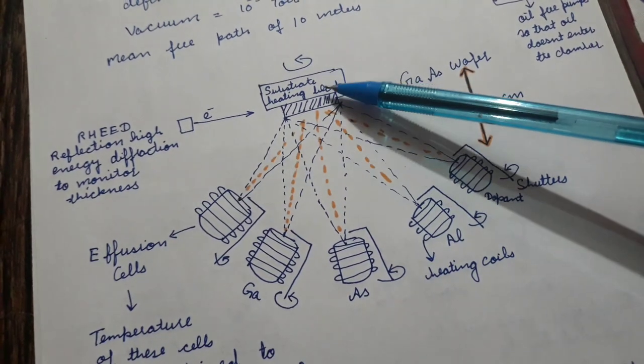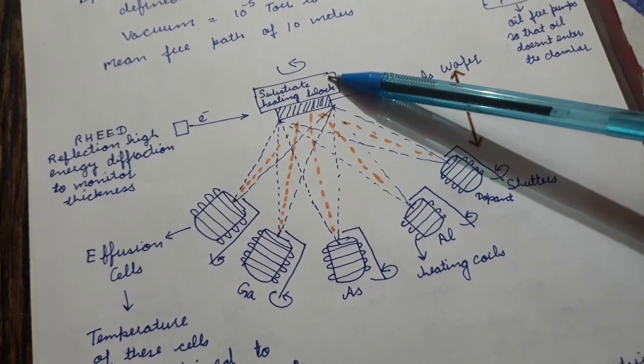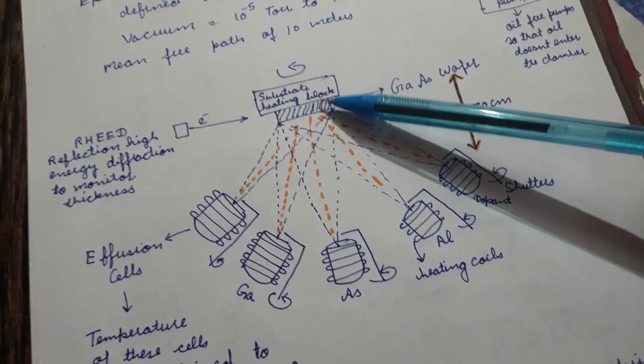The substrate is actually kept on a substrate holder and is heated and also rotated so that uniform films can be deposited.